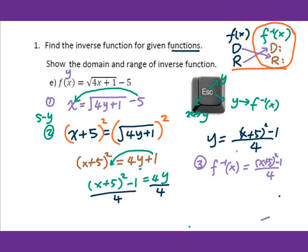Now figure out the domain and range of the inverse function. The inverse is a quadratic, which is harder to analyze directly, so go back to the original square root function. For the domain of the square root function, set the radicand greater than or equal to 0: 4x plus 1 greater than or equal to 0, so x greater than or equal to negative 1 over 4.